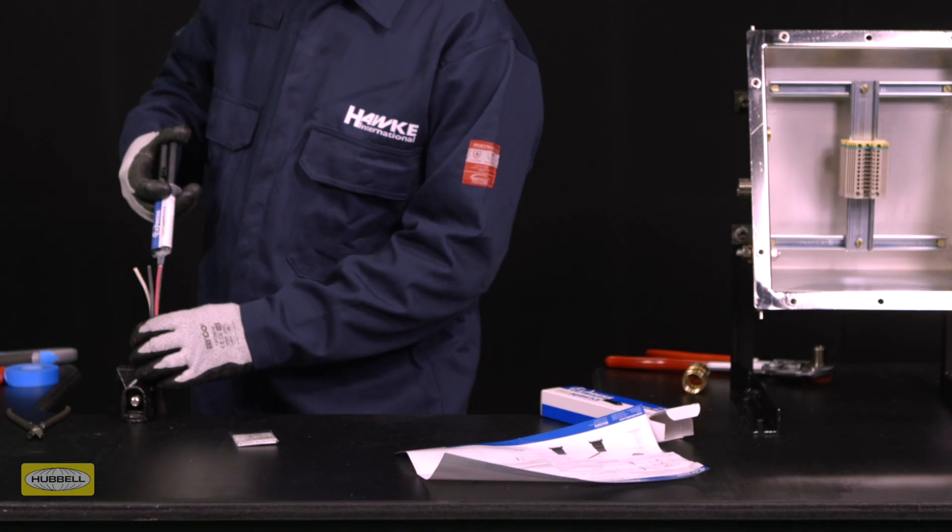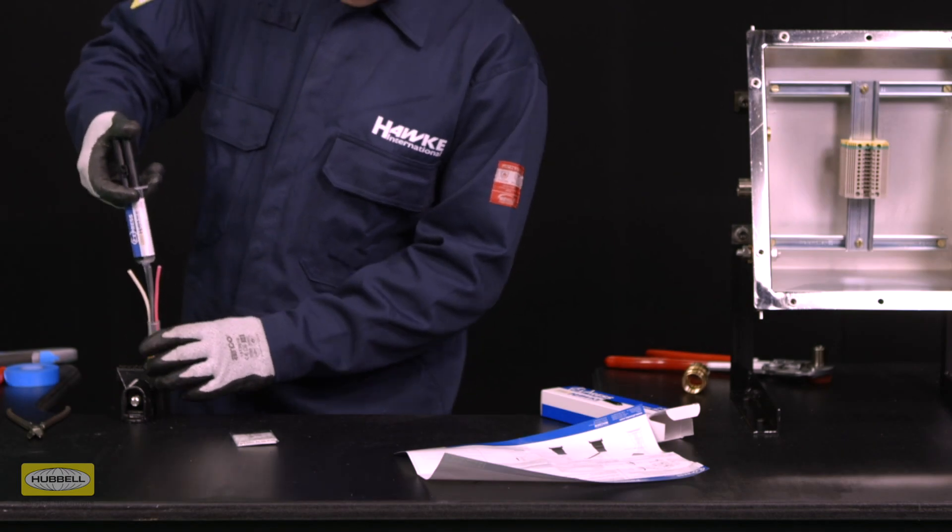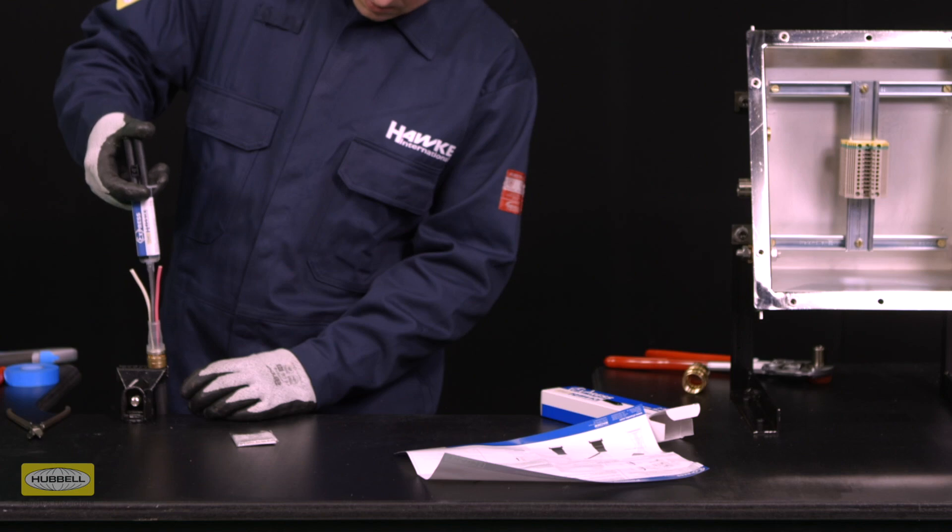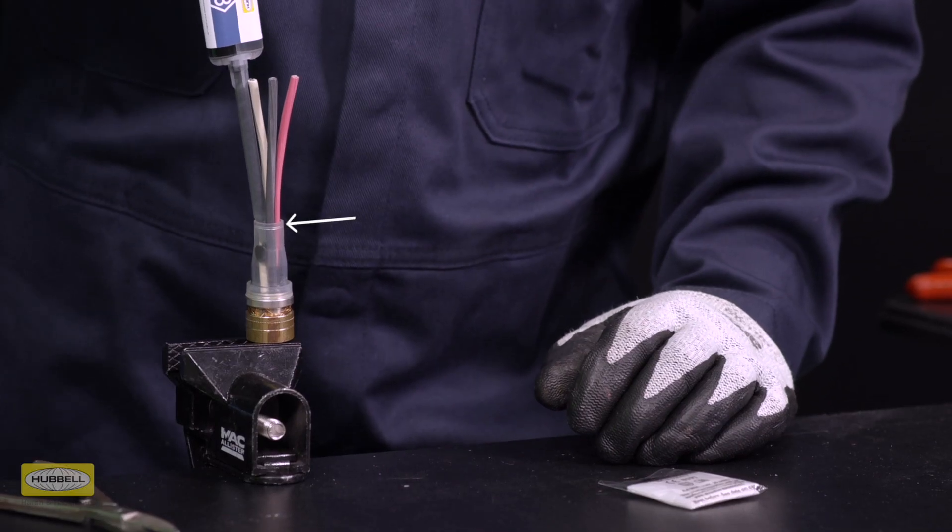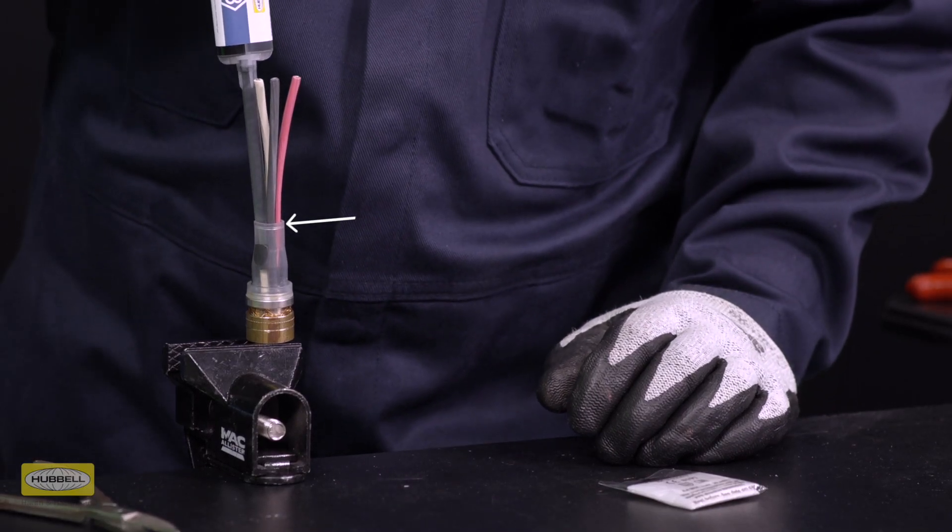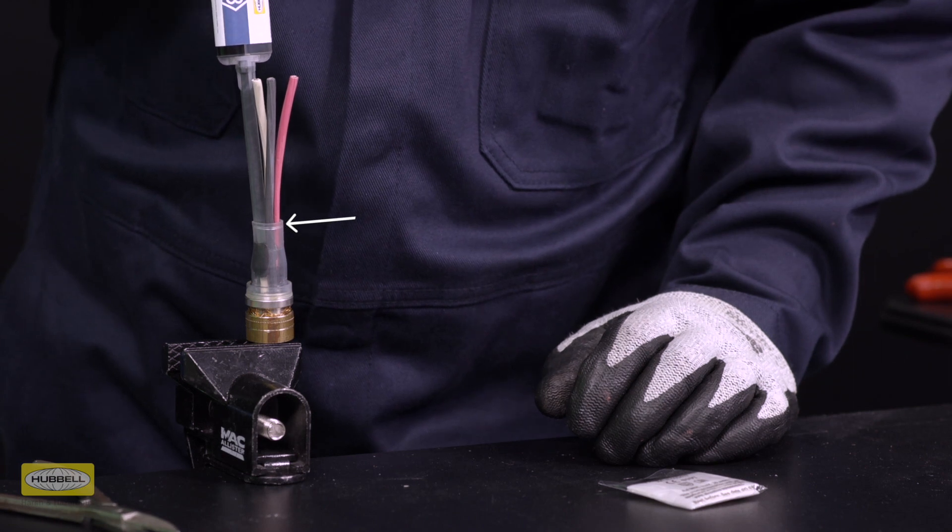Ensure the gland is held vertically. With the nozzle starting as far down the pot as possible, fill the resin to approximately three millimeters under flush. This is indicated on the silicon pot by the fill line shown on screen.